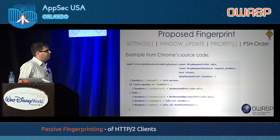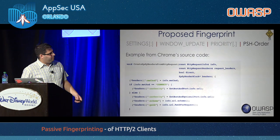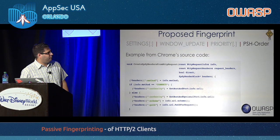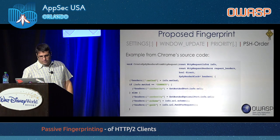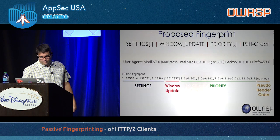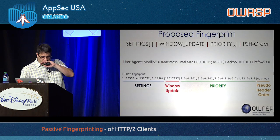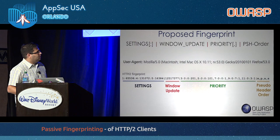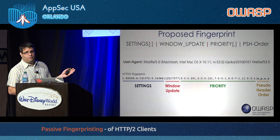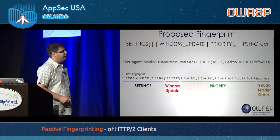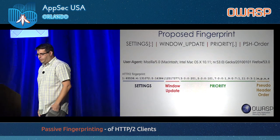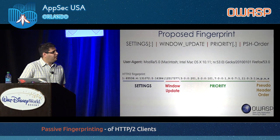So we have the final fingerprint comprising all four elements: settings, window update, priority, and pseudo-headers. This gave us quite good results and is where we stopped for the proposed fingerprint.